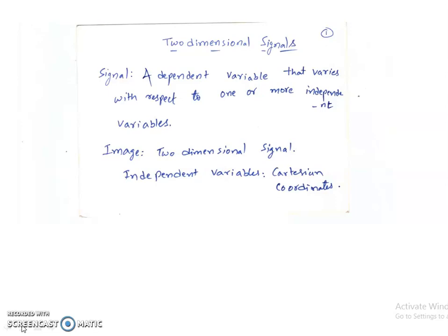An image can be a one-channel signal or a three-channel signal. If it is a grayscale image, then it is a one-channel signal. If it is a color image, then it will have three channels — namely red, green, and blue. We have seen this in the previous classes.